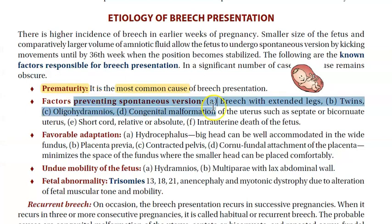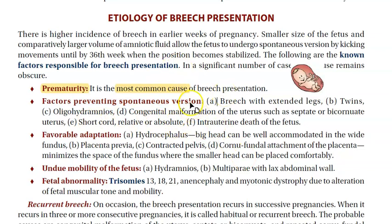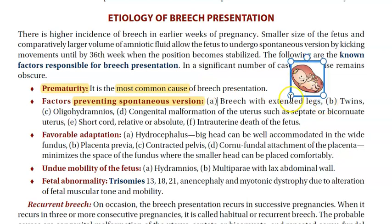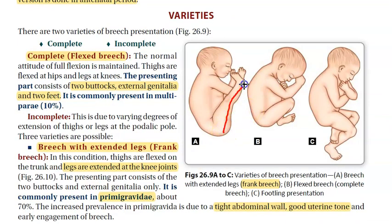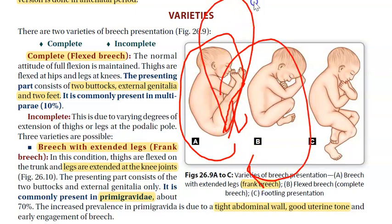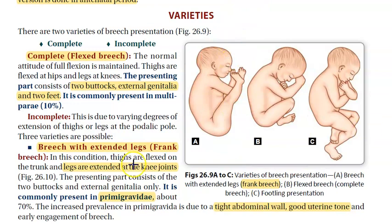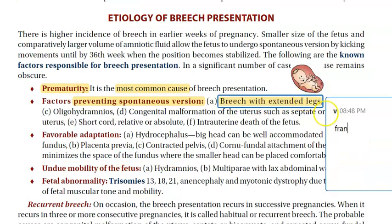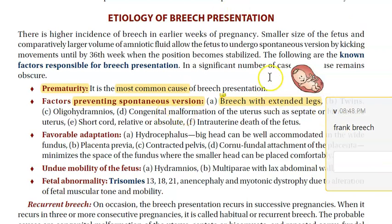Factors which prevent spontaneous version: basically the baby had to turn, but spontaneous version is not happening. If there are extended legs — breech with extended legs, also called frank breech — like in a primigravida with a tight abdominal wall, it cannot undergo spontaneous version and turn itself. So breech with extended legs is frank breech, and in this case we cannot have spontaneous version.